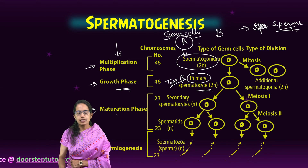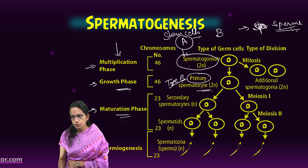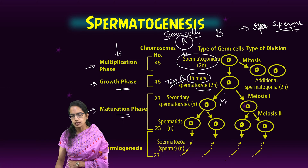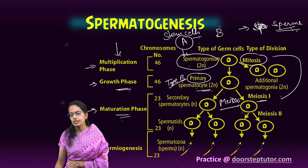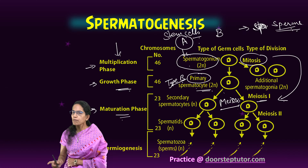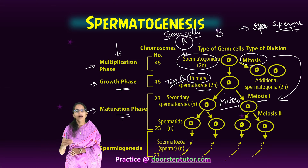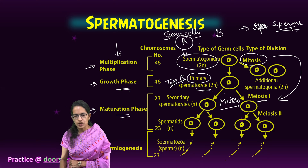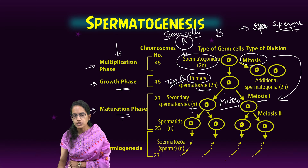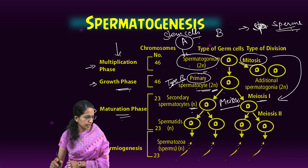The next is the maturation phase. Each primary spermatocyte undergoes two successive meiotic divisions. This is the stage where meiosis occurs — prior to this, it was the process of mitosis. Here the process of meiosis takes place and secondary spermatocytes are produced, which are haploid (N). However, primary spermatocytes and spermatogonium are diploid, that is 2N.